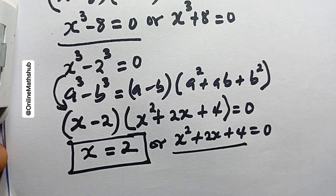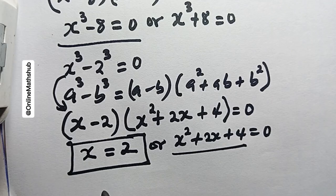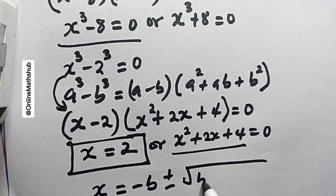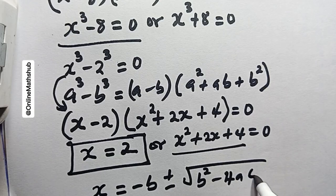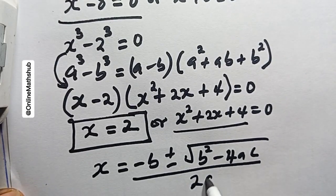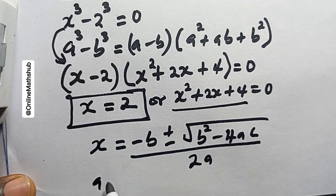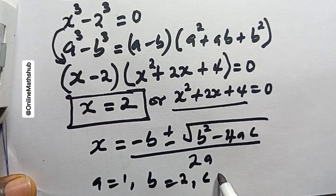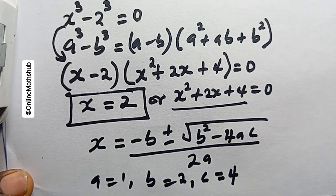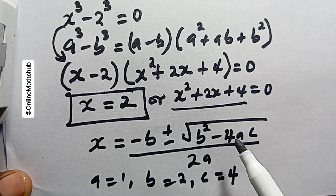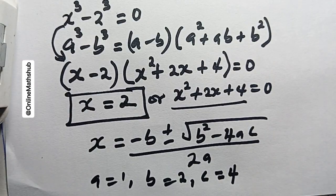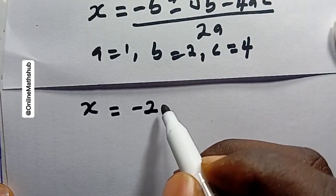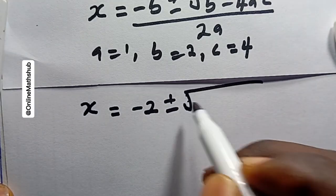I'm going to use the quadratic formula: x equals minus b plus or minus the square root of b squared minus 4ac, all divided by 2a. In this case, a equals 1, b equals 2, and c equals 4. Substituting, x equals minus 2 plus or minus the square root of 2 squared minus 4 times 1 times 4, divided by 2 times 1.